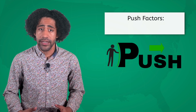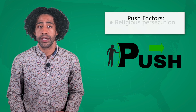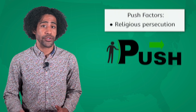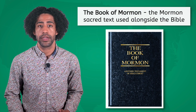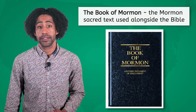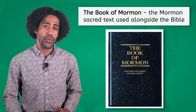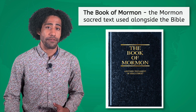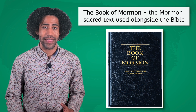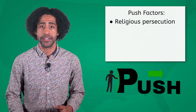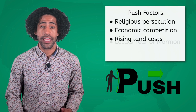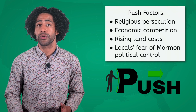The main factor repeatedly pushing Mormons from their homes was religious persecution. This persecution increased after Smith published the Book of Mormon, their sacred text used alongside the Bible. Some Christian branches saw this new religious movement and the additional religious text as offensive to their faith and began violent campaigns against Mormons. The other push factors were non-religious, including economic competition, rising land costs, and the locals' fear of Mormon political control.